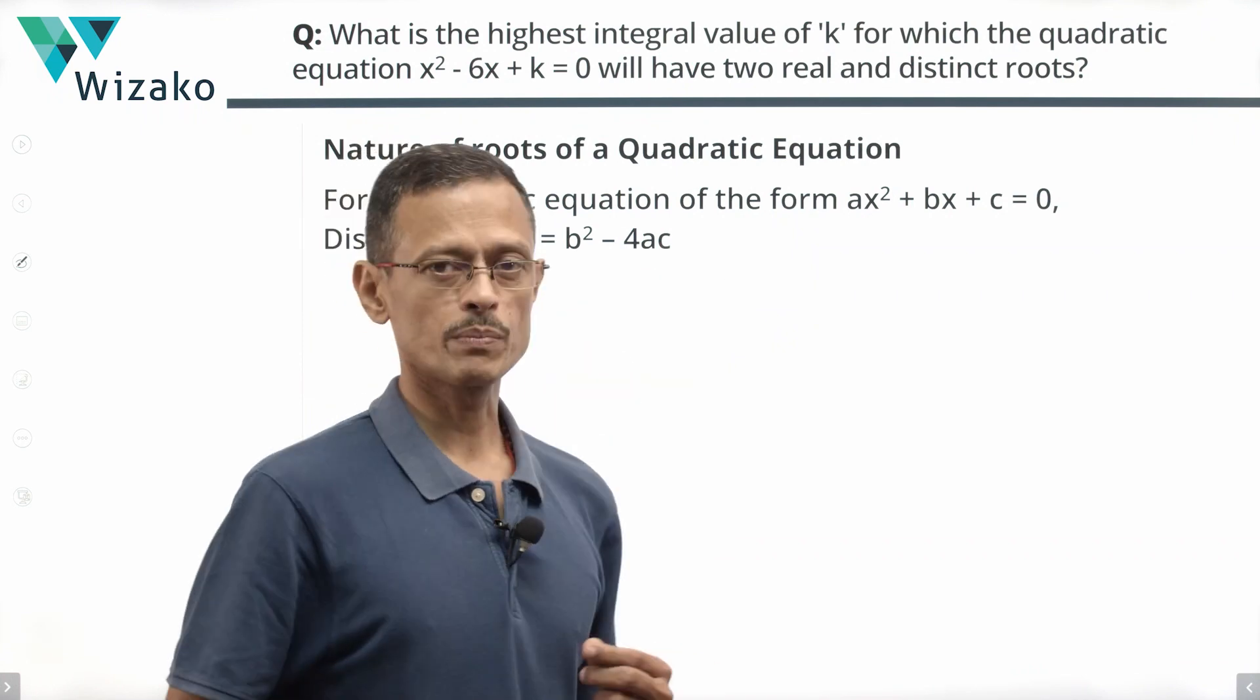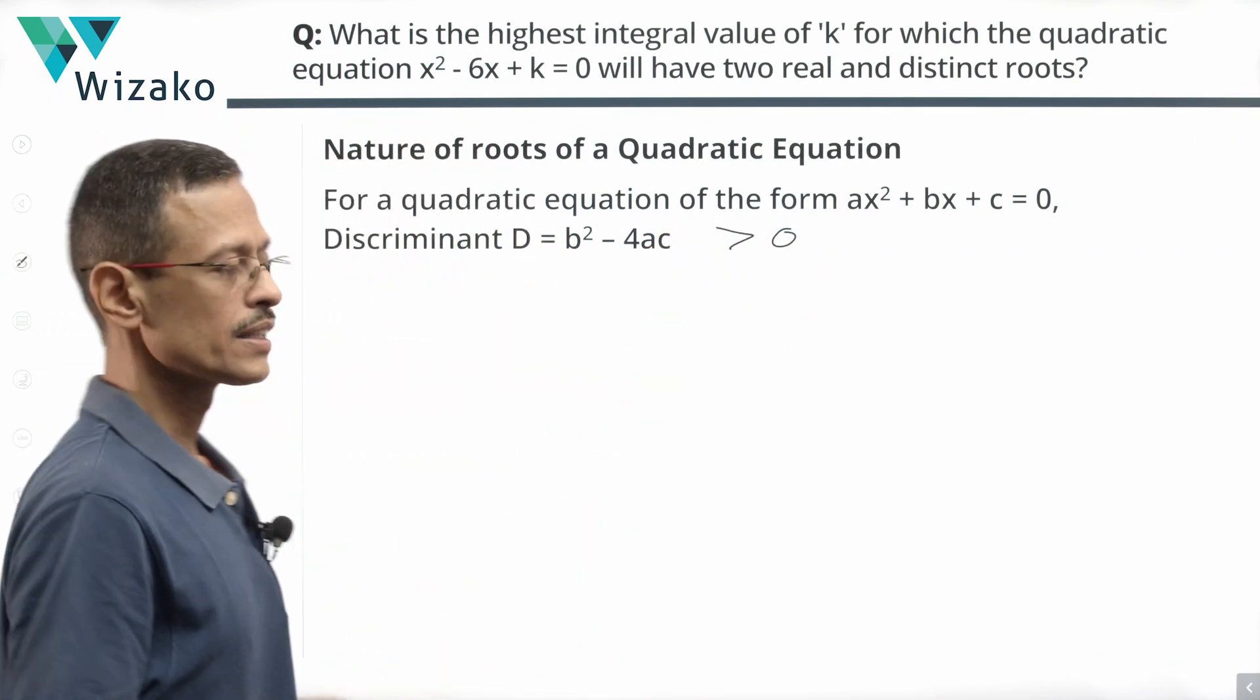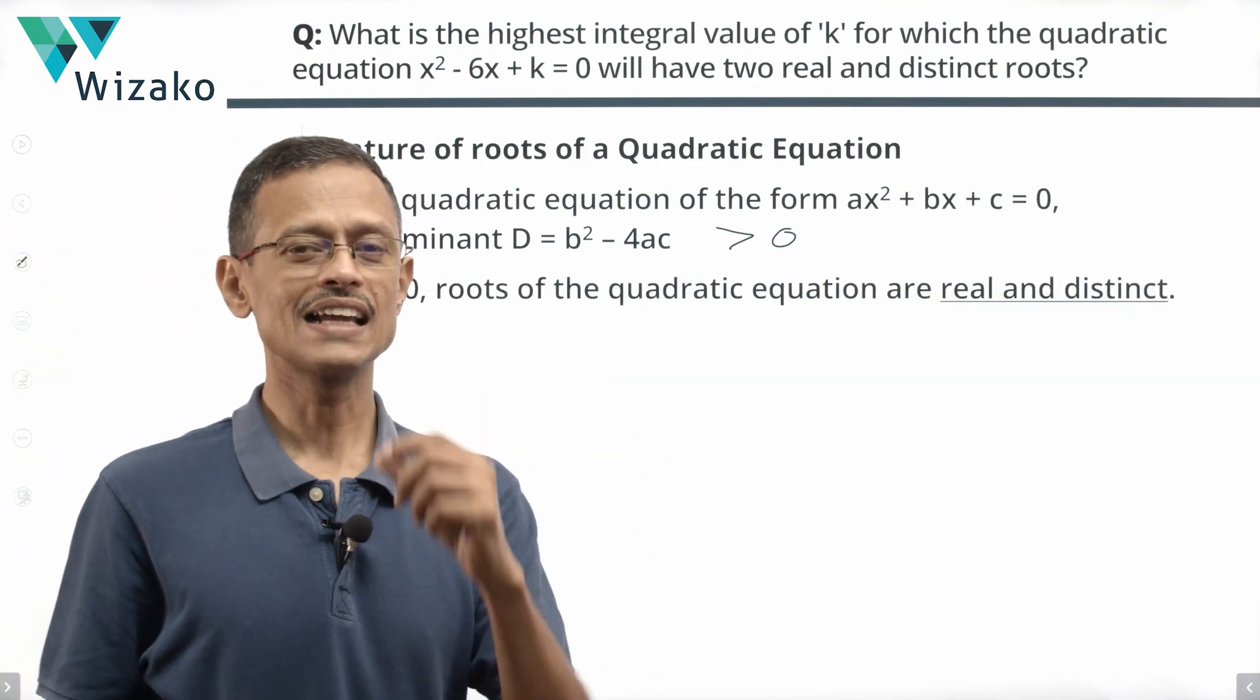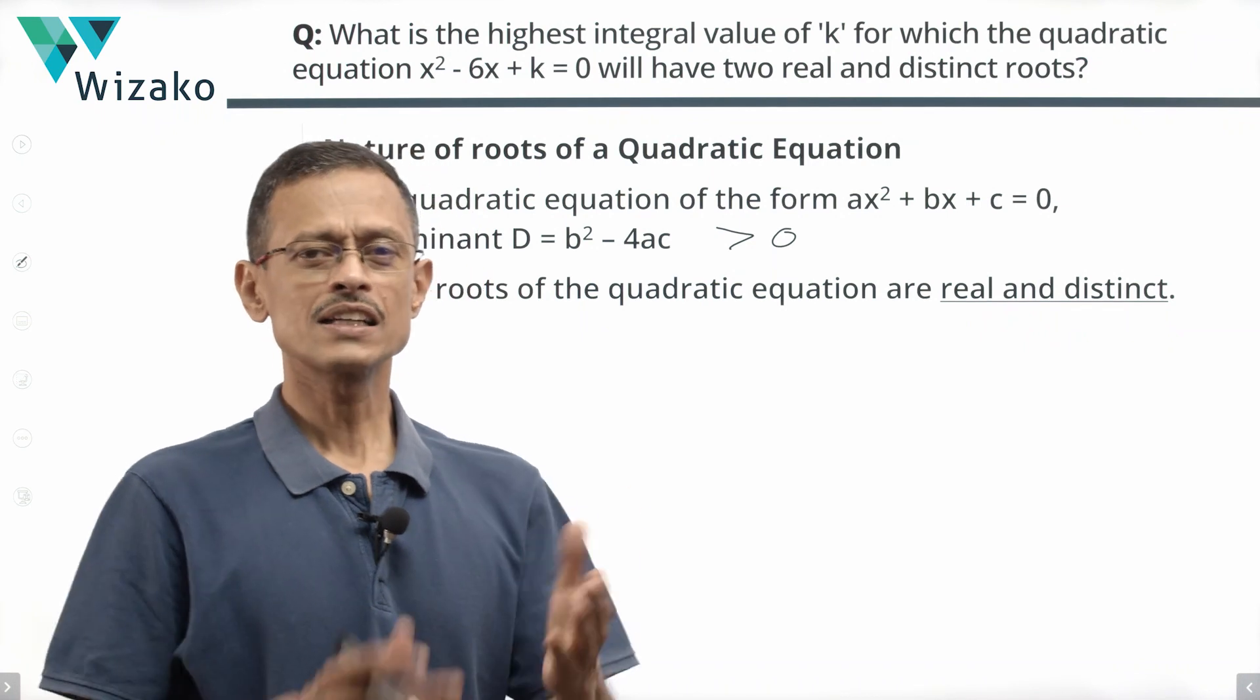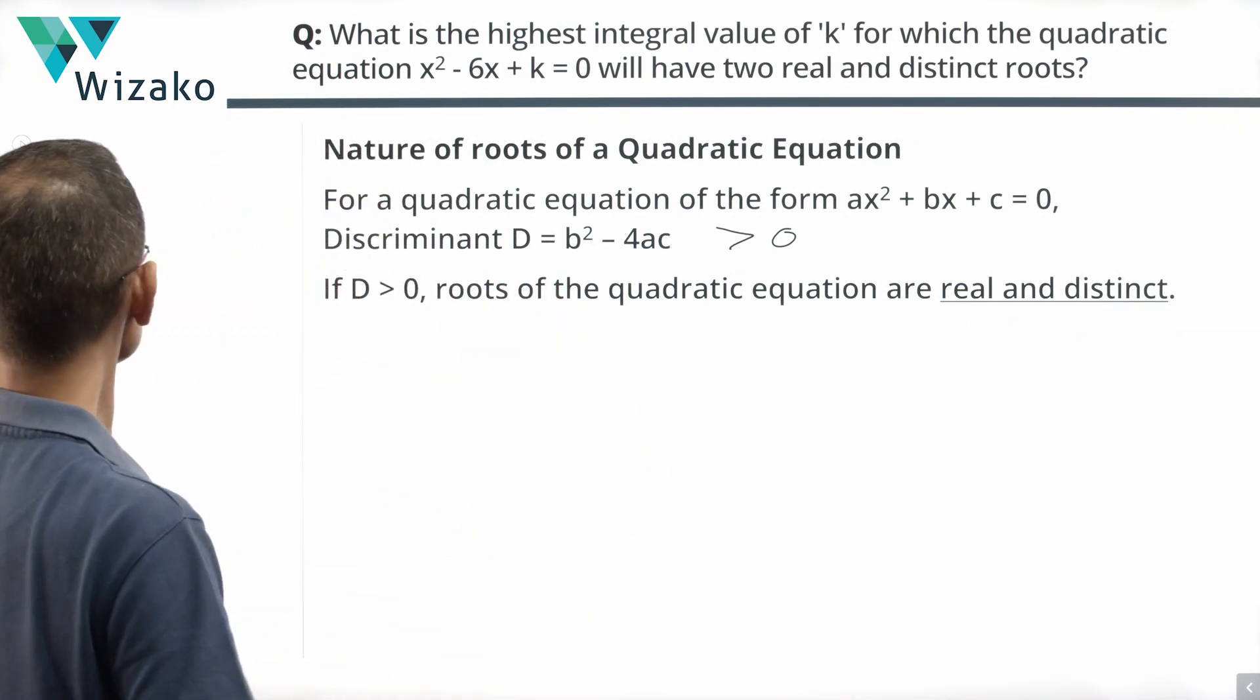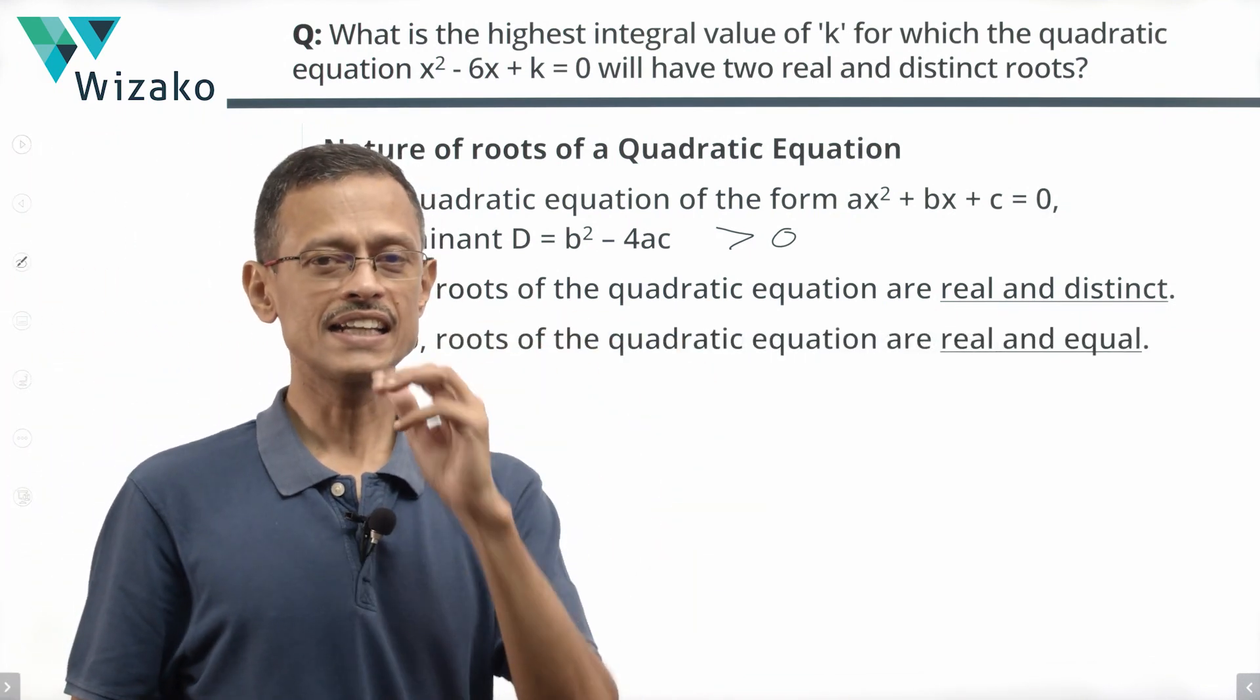If the discriminant is positive, if D is greater than 0, then the roots of the quadratic equation will be real and unequal, real and distinct as asked in this question. There are two other possibilities. It could be a positive number. It could be 0. If the discriminant is equal to 0, the roots of the quadratic equation will be real and equal.